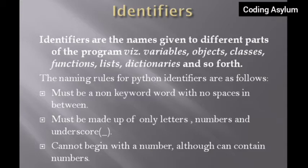If you want to name an identifier with multiple words, either have no space in between or add an underscore in between. The second rule is that an identifier must be made up of only letters, numbers, and underscores — no other special character is allowed. You cannot use an asterisk, for example. Only underscore, letters, and numbers are permitted.